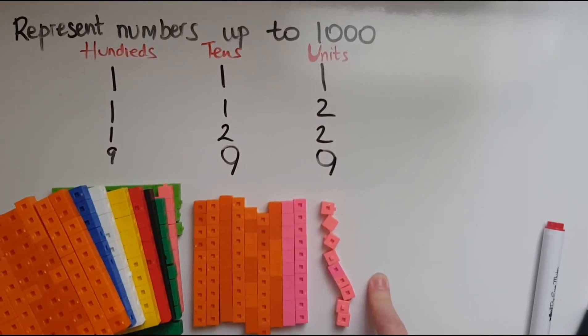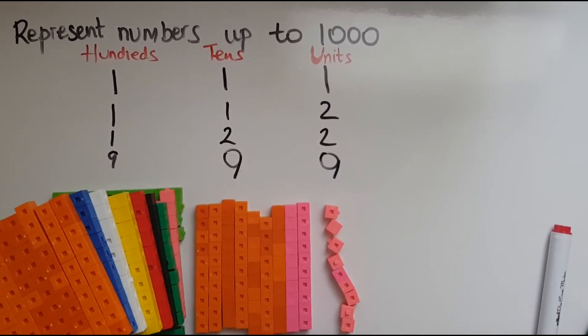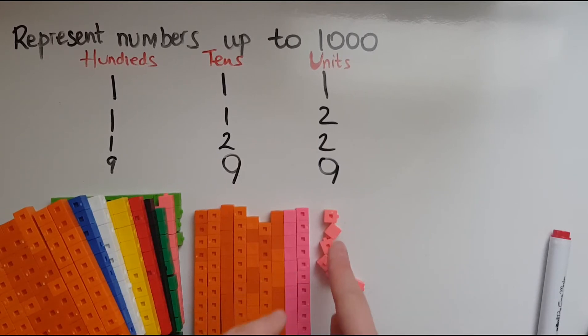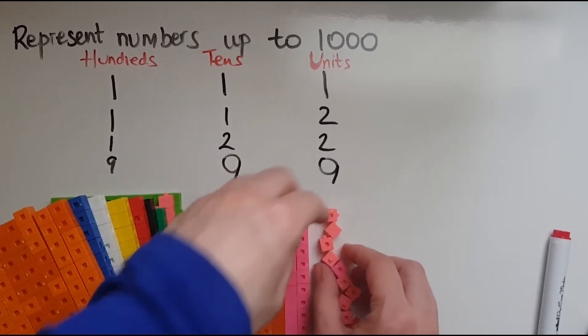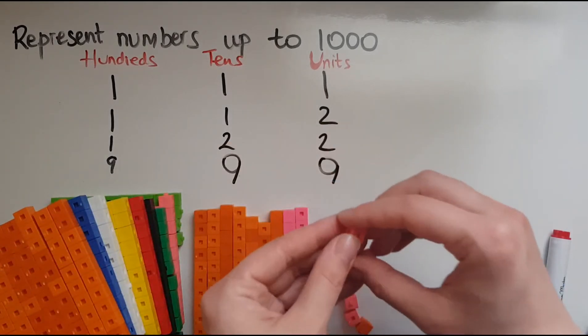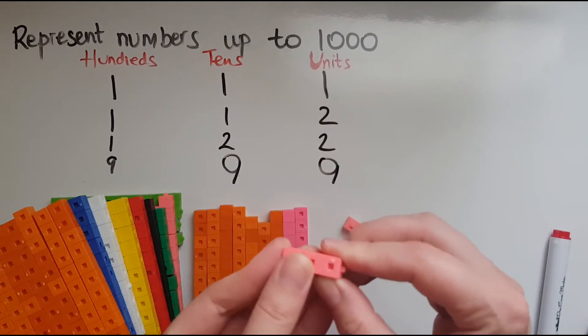Now what is going to happen if I add just one more unit? If I add one more unit, this is going to become a ten because I've got 10 single ones which means that this is going to look like this if I put them all together.